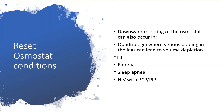Still on downward resetting of the osmostat, this can occur in quadriplegia — because venous pooling in the legs can lead to volume depletion. It can occur in infectious conditions like tuberculosis. Also in HIV with PCP, that is Pneumocystis carinii pneumonia, now known as Pneumocystis jirovecii pneumonia, can have reset osmostat. It can also occur in the elderly, particularly people ages 60 and above, and also in sleep apnea.